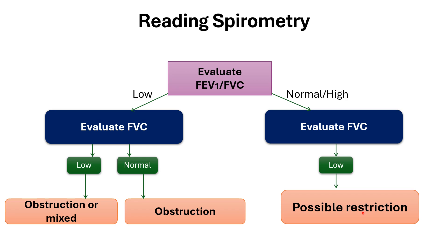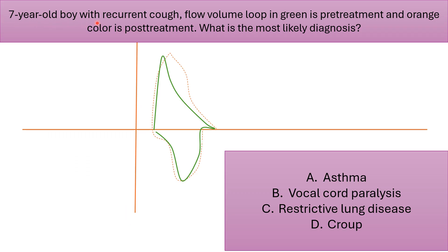This is a seven-year-old boy with recurrent cough. The flow-volume loop in green is before treatment — pre-treatment — and the orange color is after treatment with beta-2 agonists, for example albuterol.